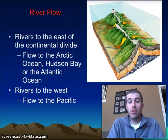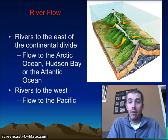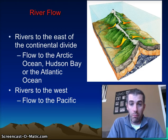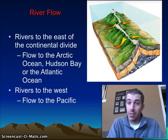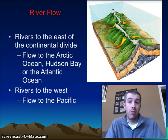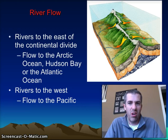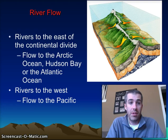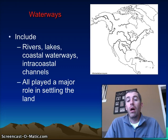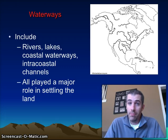This brings us to river flow. As we just said, if water goes to the west it goes to the Pacific. If it goes to the east, it goes to the Atlantic, but there are other bodies of water that feed into the Atlantic, such as Hudson Bay, the Arctic Ocean, and the Gulf of Mexico. So river flow is kind of important, and this gets us into those rivers.